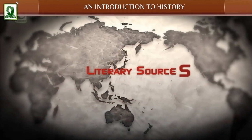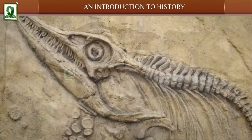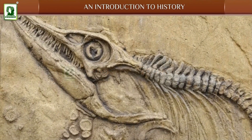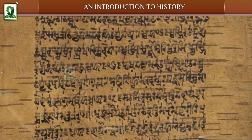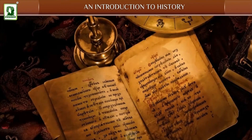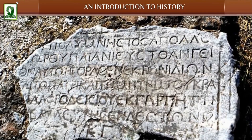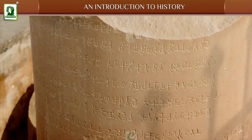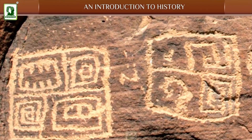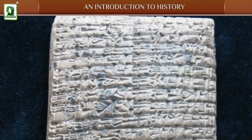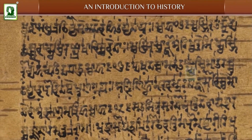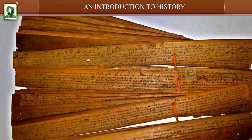Literary sources: History is based mainly on written records such as manuscripts, books, writing on rocks, pillars, stones and stone walls, clay tablets, barks of trees, and palm leaves.